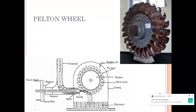To decrease and increase the speed or velocity of flow, I have a spear arrangement. If the spear goes back I can increase the velocity; if I push it forward I can decrease the velocity. It can be operated manually or automatically depending on my design. This spear arrangement lets me increase or decrease the velocity of flow.